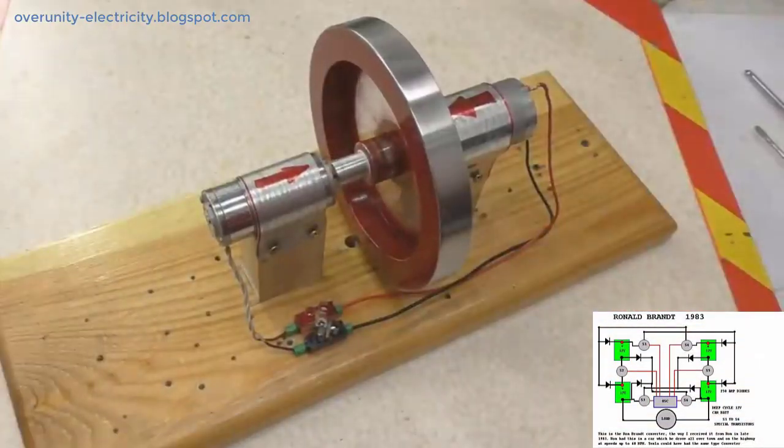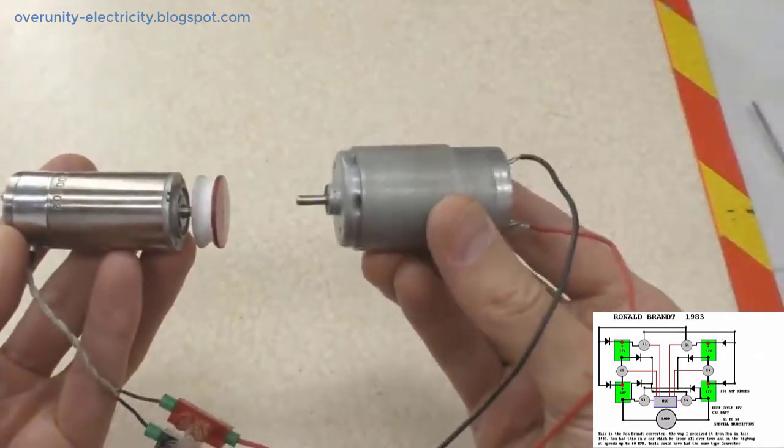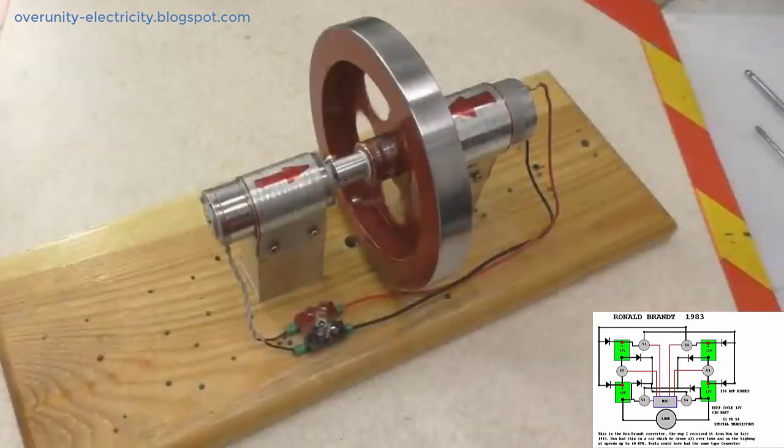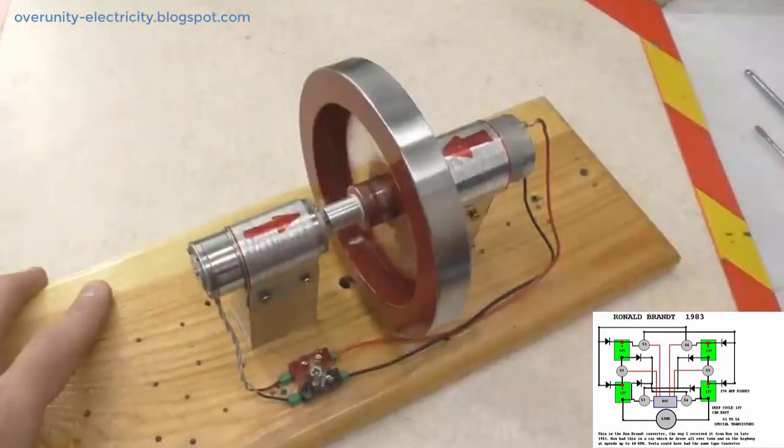In 1888, Nikola Tesla invented the first AC generator named the electromagnetic motor, U.S. Patent No. 381968.